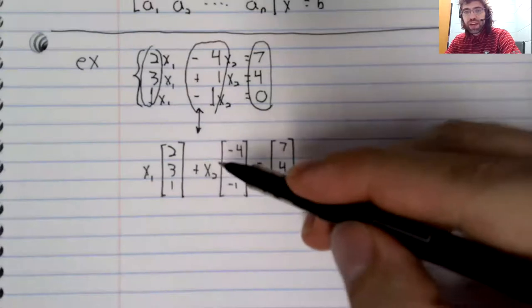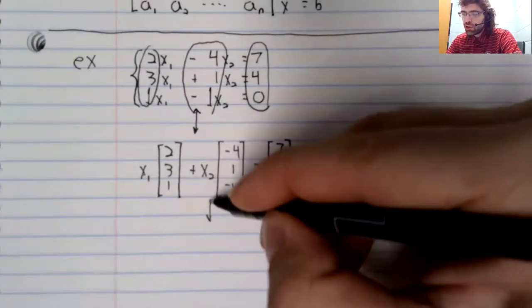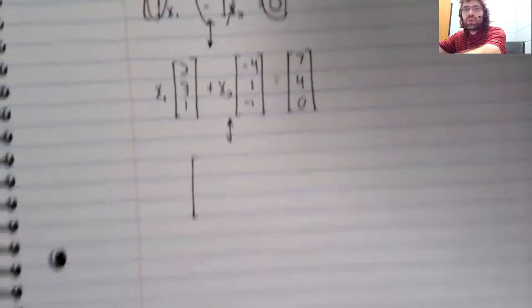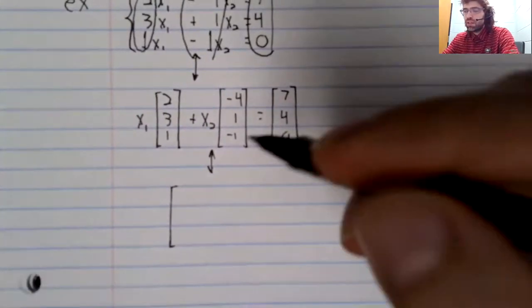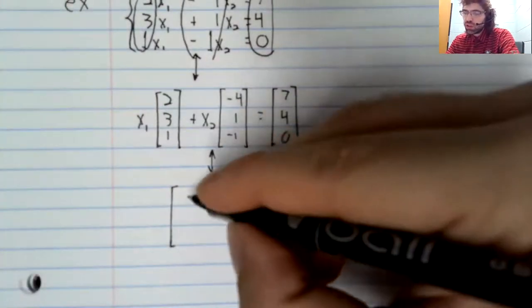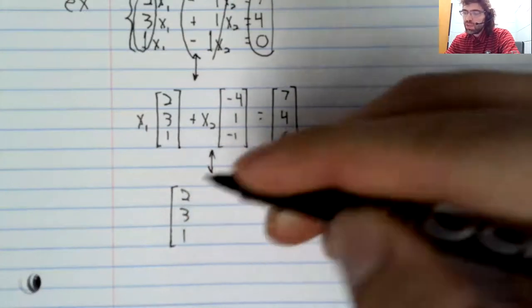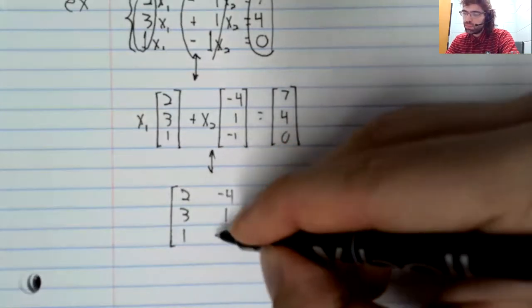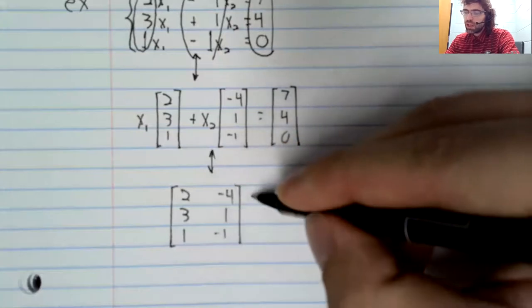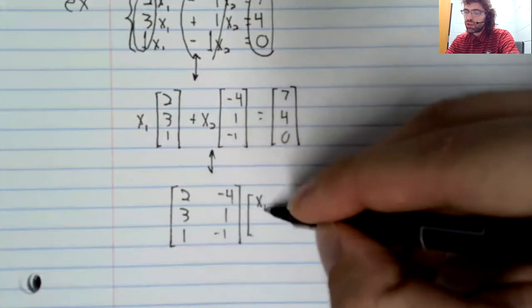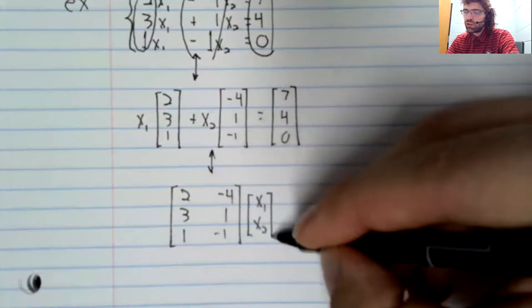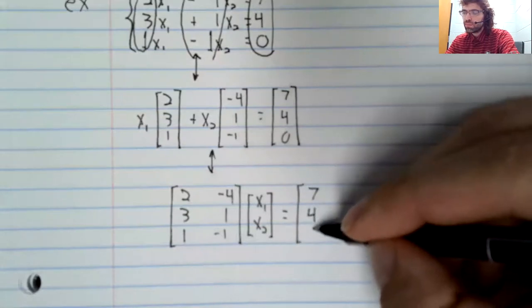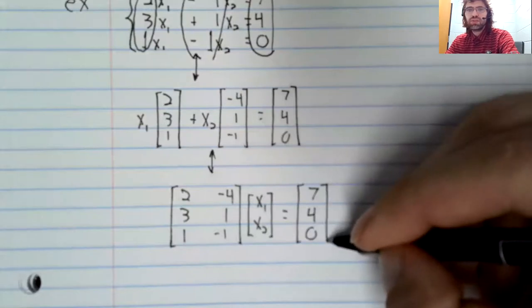And this vector equation in turn is the same as the matrix equation. If you have this as your first column and this as your second column, the matrix times the unknown vector x1, x2 equals this vector.